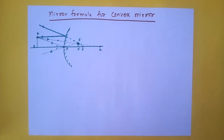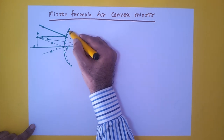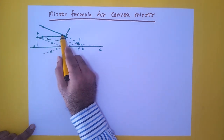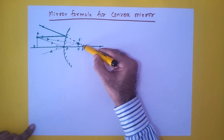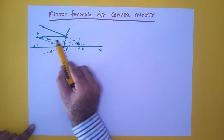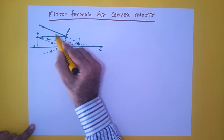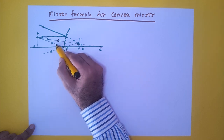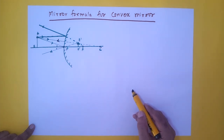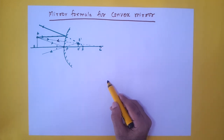After having discussed the mirror formula for convex mirror, we will again derive the same equation for a convex mirror. Here we have the convex mirror and the object AB. A ray of light parallel to the principal axis gets reflected such that it appears to come from the focus. A ray appearing incident on the center of curvature reflects along the same path. A ray incident on the pole reflects such that the angle of incidence equals the angle of reflection. This is how reflection happens in a convex mirror.